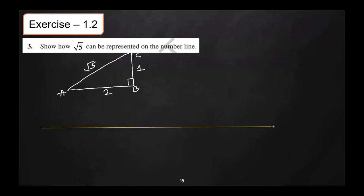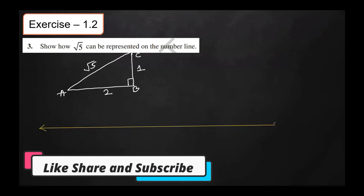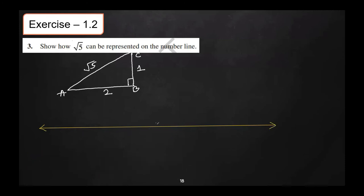Draw the number line. Mark zero, then one, two, three, four, five with gaps of one centimeter between two numbers. On the other side, mark minus one, minus two, minus three, minus four.